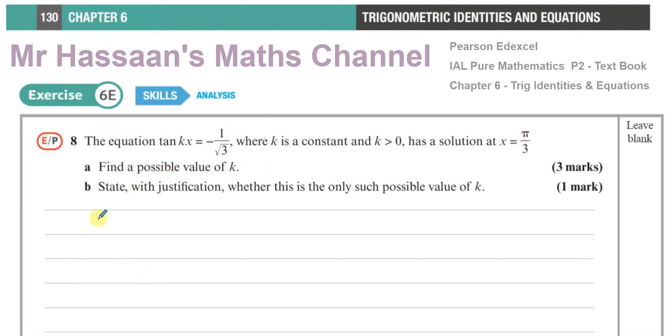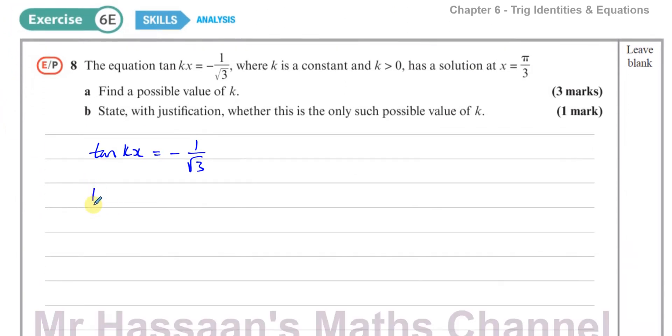So we know that the tan of some multiple of x is equal to minus 1 over root 3. We know that x equals π over 3, so we can say the tan of k times π over 3 is equal to minus 1 over root 3.